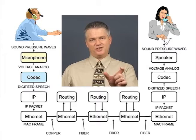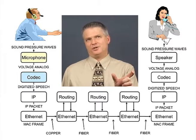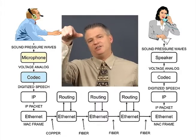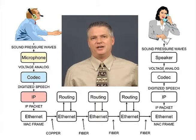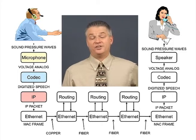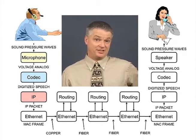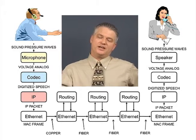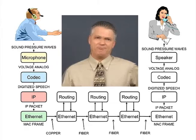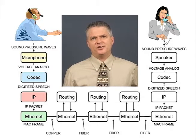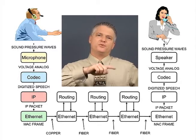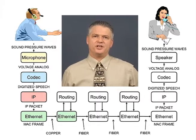Then we take chunks — usually about 20 milliseconds worth of speech — put that inside an IP packet, and place the IP address of the destination telephone on the front of that packet. That goes into a LAN frame with all of the LAN addressing, and we pump these packets inside frames through a whole bunch of routers in the network.